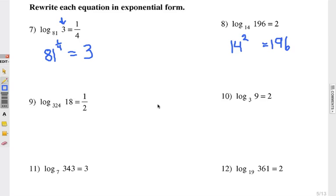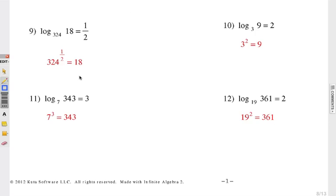Now take a look at these four and see if you're right. Number nine: remember the base is here and this is the exponent. So it's 324 to the one-half power, which actually means the square root of 324 equals 18.